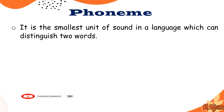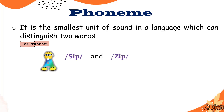A phoneme is the smallest unit of sound in a language which can distinguish two words. In simple words, a phoneme is the smallest unit of sound. For example, there are two words: sip and zip. Sip and zip only differ by two sounds — the smallest unit of sounds are phonemes: /s/ and /z/. /s/ for sip, /z/ for zip. So these are known as phonemes.